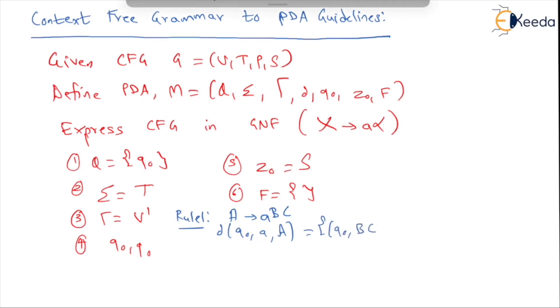Similarly my rule 2 says for a production of the form A gives a, you write del q0 on a when the stack top is A goes to q0 and performs a pop operation. As simple as that. Just remember these two rules and the problem is solved.